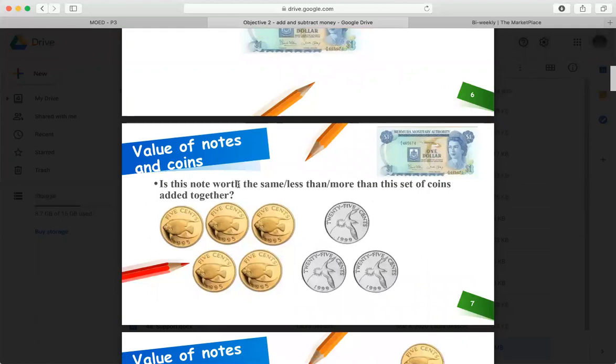5, 10, 15, 20, 25. And these are quarters, so those are $0.25 cents. $0.25, $0.50, $0.75.